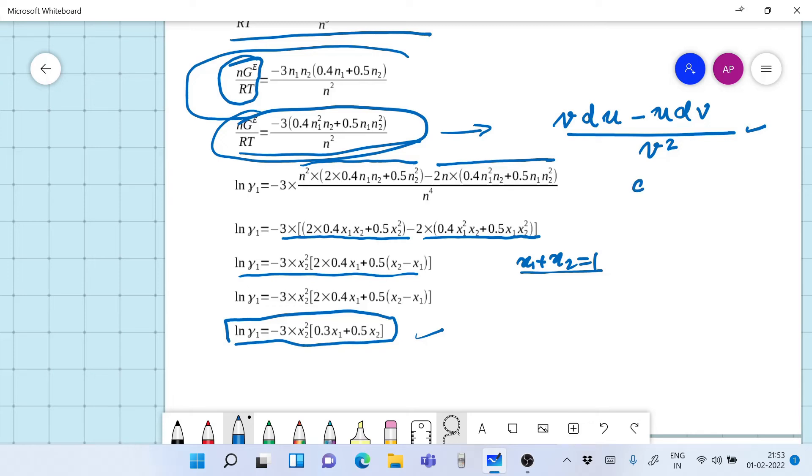Now I do know that one can always write this as minus 1 upon v square u du plus 1 upon v du. Okay, I made a slight error here. I should write this as dv.